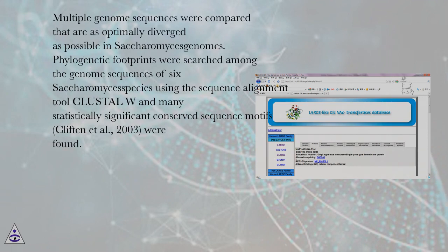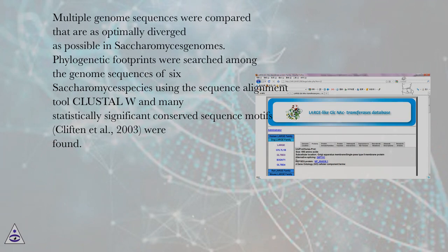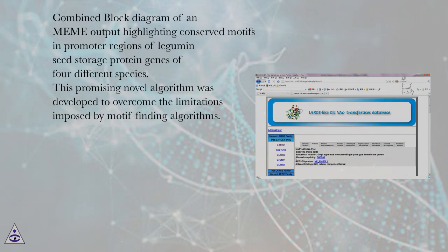Multiple genome sequences that are as optimally diverged as possible were compared in Saccharomyces genomes. Phylogenetic footprints were searched among the genome sequences of six Saccharomyces species using the sequence alignment tool ClustalW, and many statistically significant conserved sequence motifs (Clifton et al., 2003) were found. A combined block diagram of a MEME output highlighting conserved motifs in promoter regions of legume and seed storage protein genes of four different species is shown.